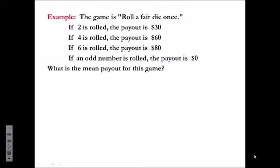The game is roll a fair die once. If a 2 is rolled, the payout is $30. If a 4 is rolled, the payout is $60. If a 6 is rolled, the payout is $80. And if an odd number is rolled, the payout is nothing. What is the mean payout for this game?